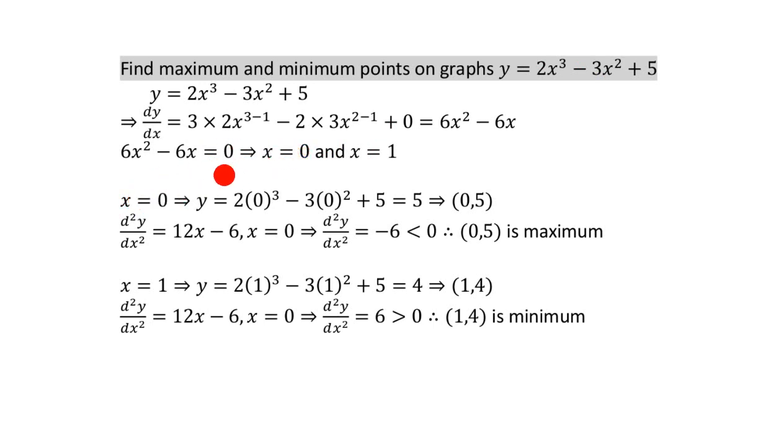So, the first thing I'm going to do is actually find out the whole coordinate. x equals 0 means what? Well, I stick 0 into the equation and basically I get 5. So when x equals 0, y equals 5, which means a point on this graph where the gradient is 0 is (0,5). So we've got one point where the gradient is 0.